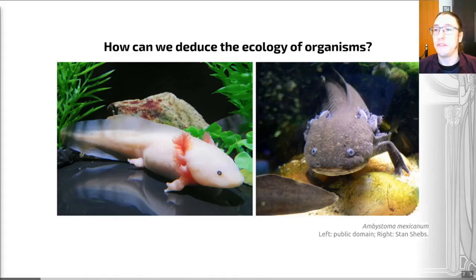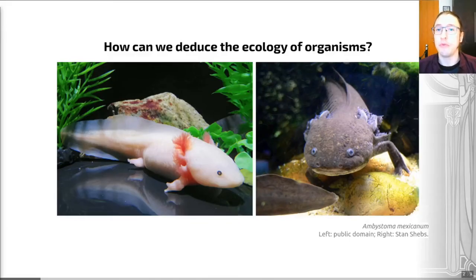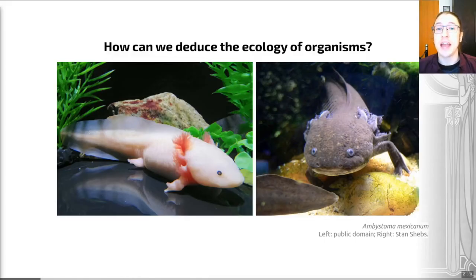Functional morphology is the field in which we deduce the function of the part of an animal from its morphology — the clue is in its name. It's using the anatomy of extinct creatures to say things about their mode of life: how their morphological form is related to their function. We can combine lots of pointers from different parts of the anatomy of fossil creatures to get a clearer idea of the mode of life that they had and therefore how they fitted into their ecosystems.